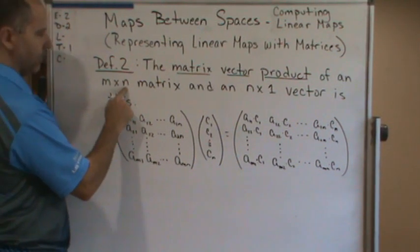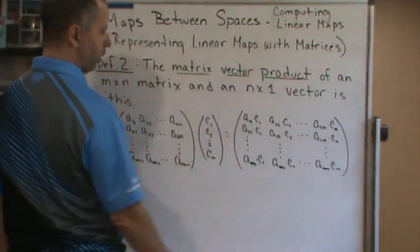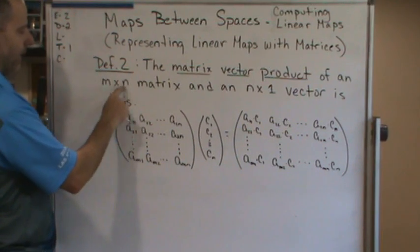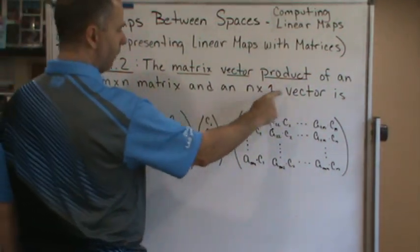Or excuse me—yeah, the number of columns matches the number of rows here, so that's going to be important later on. We have an M by N matrix and an N by 1 vector.